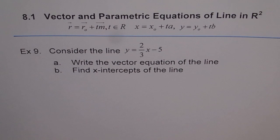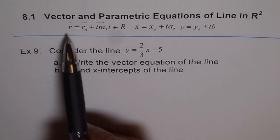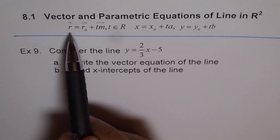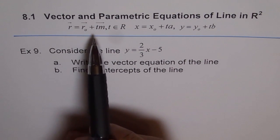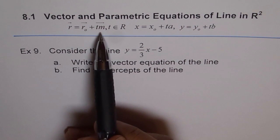To find vector equation of a line which is of this form r equals r0 plus tm, where r0 is a point on the line, t is the scalar multiple of direction vector m.